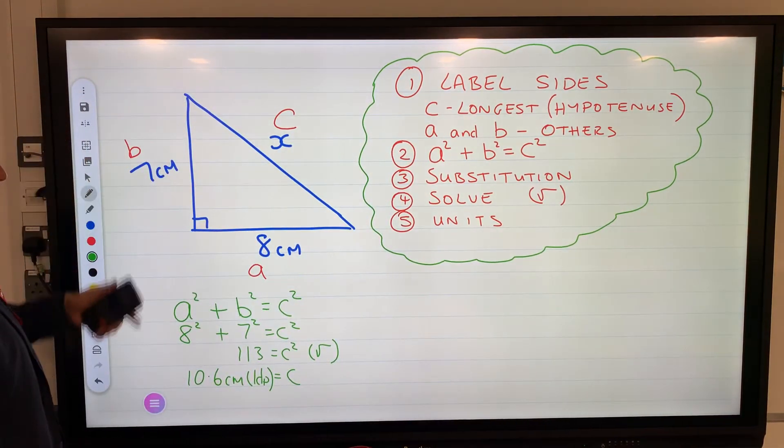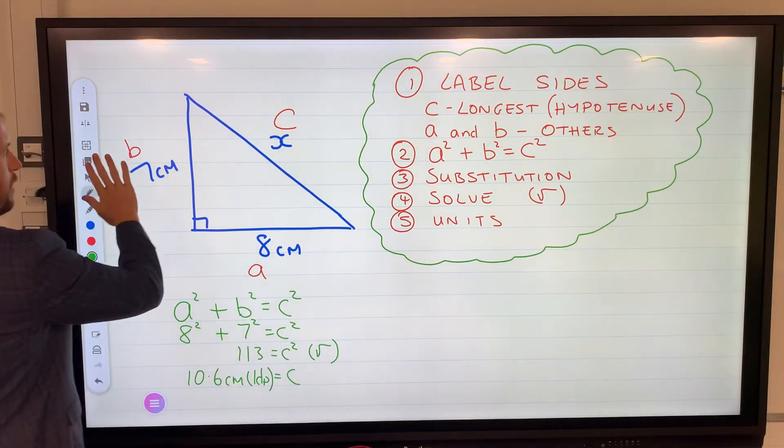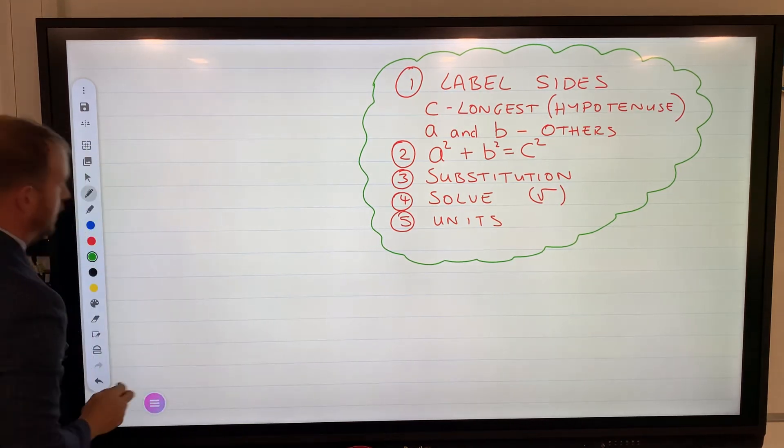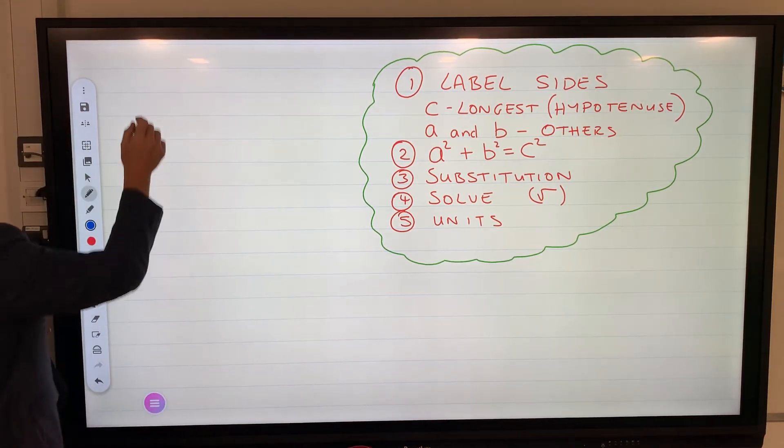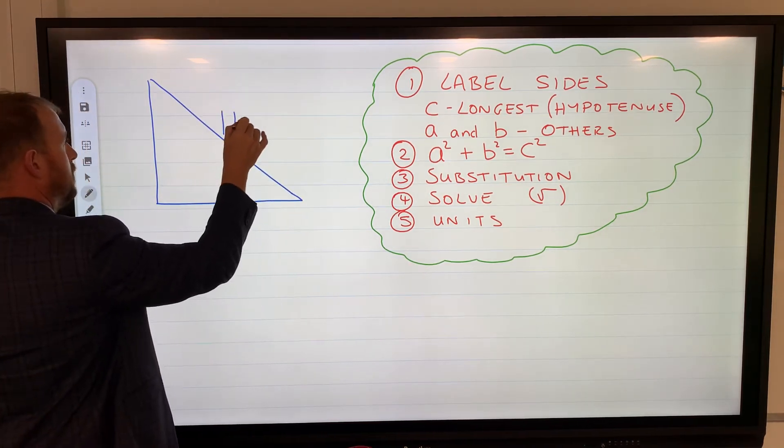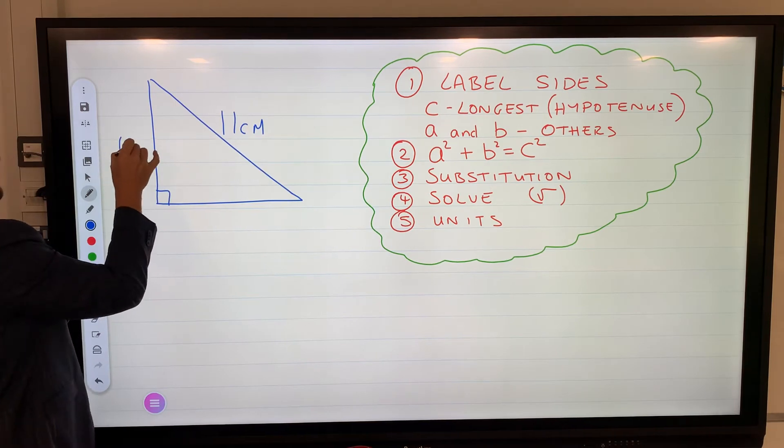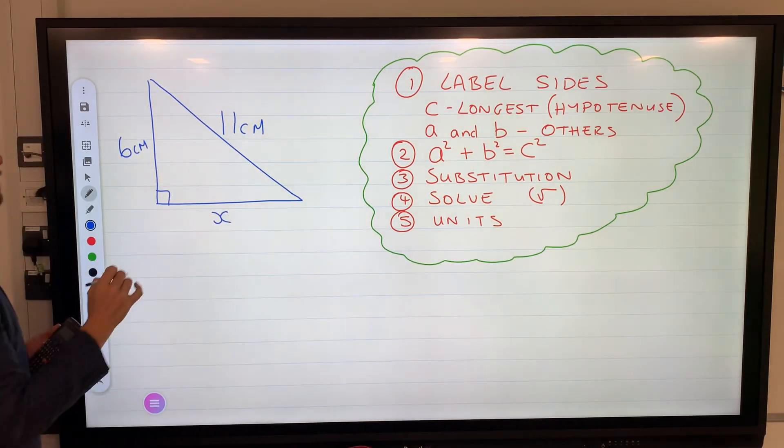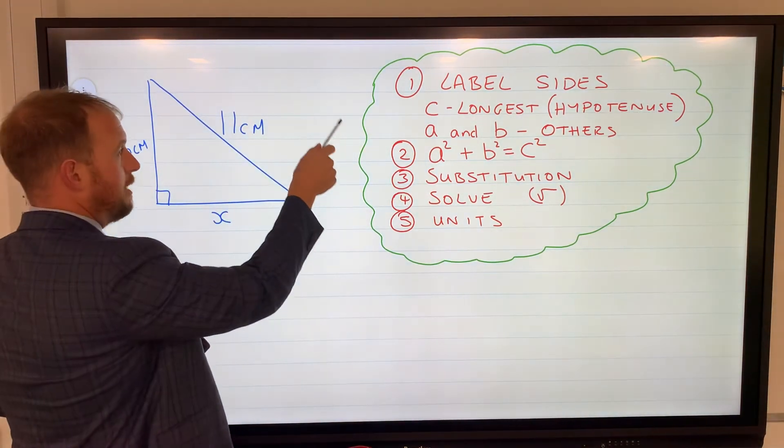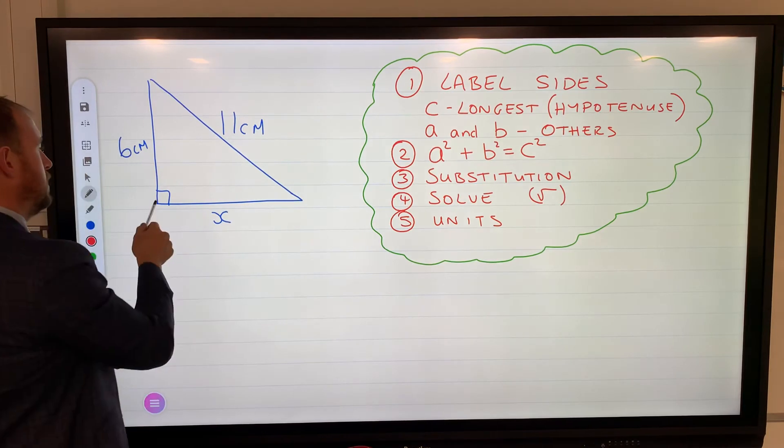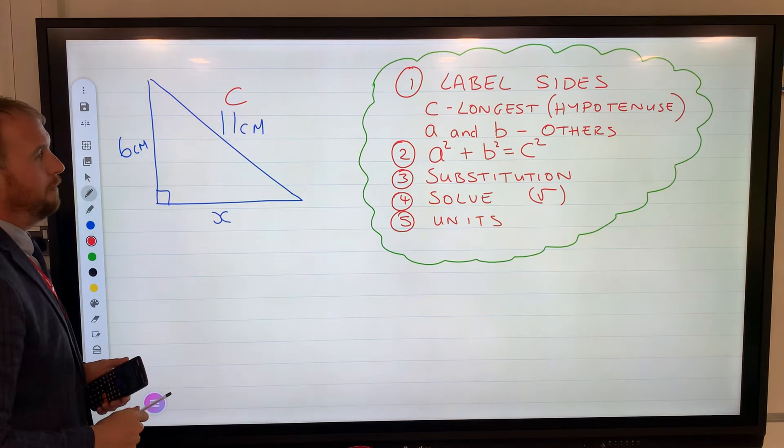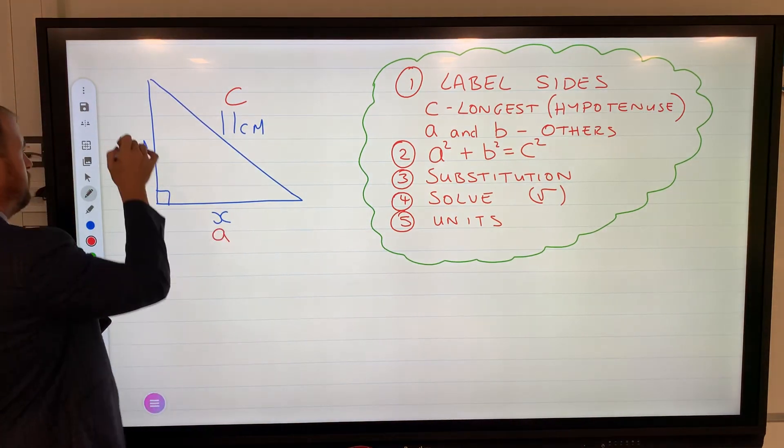So far we've been calculating the longest side. Now we can use exactly the same formula to calculate a short side. If we had the value of this one being 11 centimeters, this one being 6 centimeters, we can use it to calculate the short side. Let's follow our steps: label sides. C is the longest, it's the one that the right angle is pointing towards, so that's the hypotenuse. A and b are the others.